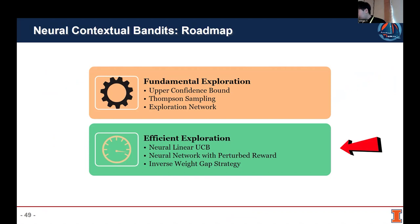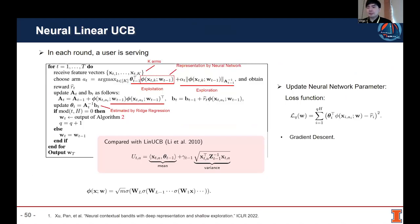Now let's move to the second part of this session: efficient exploration. As we discussed before, the previous three exploration strategies all rely on the gradient — they need to calculate the gradient of the neural network when doing inference. In some online recommendation settings, we require a very quick and efficient response. Therefore, we want to improve the efficiency of this exploration strategy.